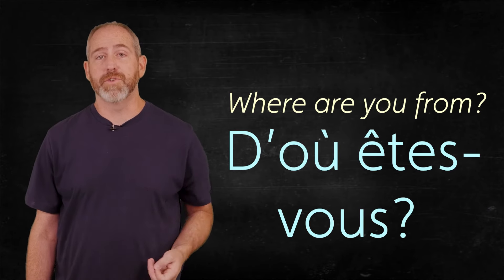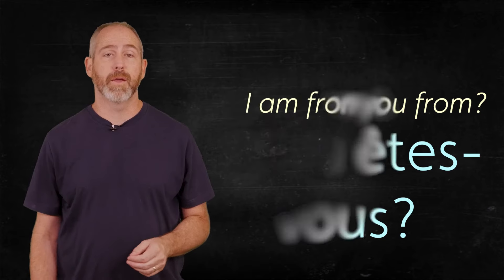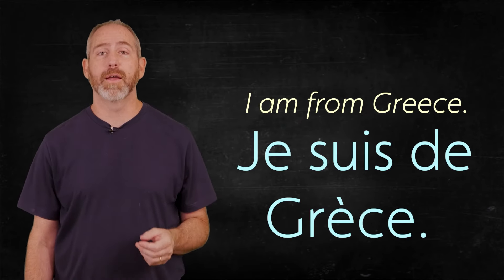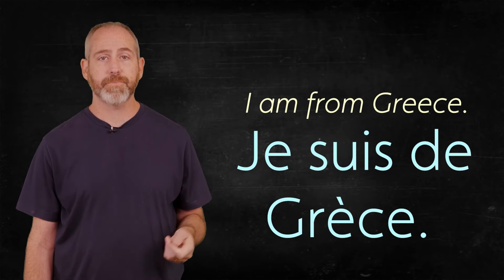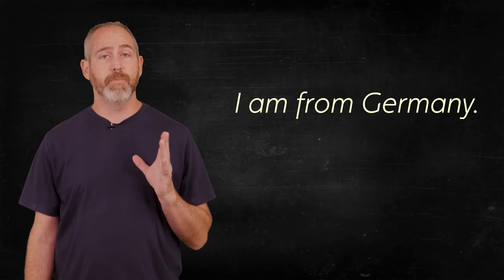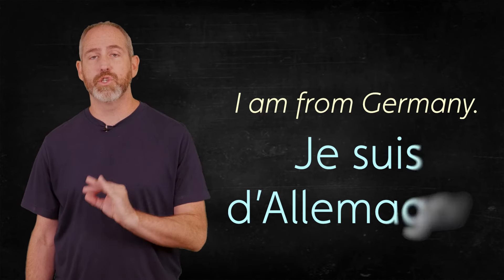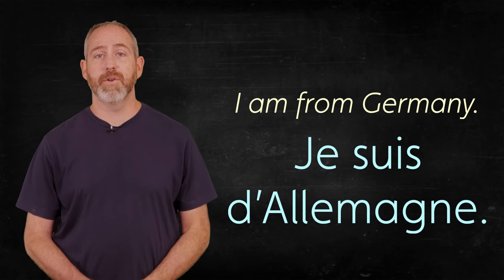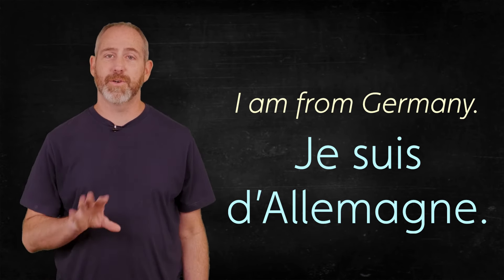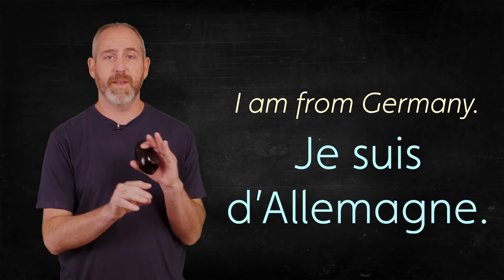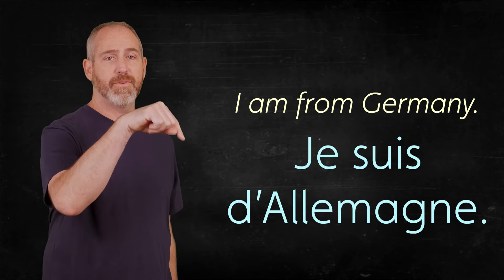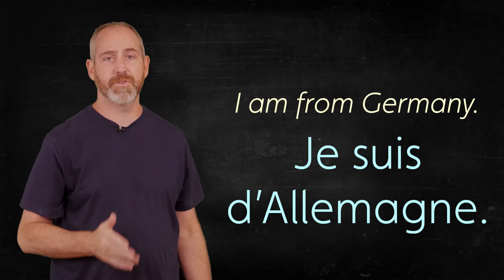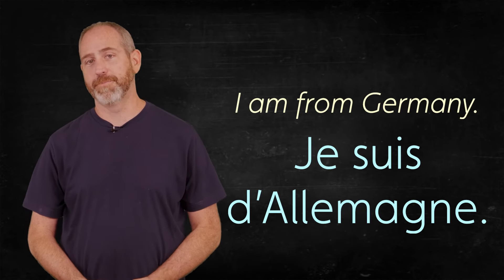Now, let's answer that question. Someone asked, where are you from? I am from Greece, for example. Je suis de Grèce. I am from Germany. Je suis d'Allemagne. Now, notice Germany starts with an A in French, and so we're going to combine I am from Germany. De ends with a vowel, and Allemagne begins with a vowel, so we combine it and make D apostrophe. Je suis d'Allemagne.